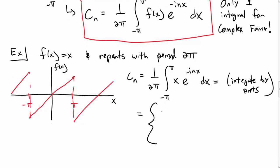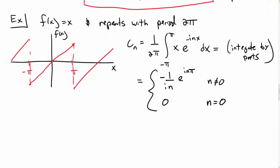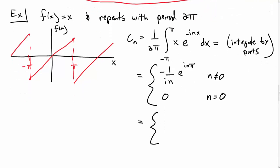But what I get then, it depends on which case I consider, if n is equal to 0 or not equal to 0. If n is not equal to 0, I get -1/(in) e^(inπ). And I get 0 if n is equal to 0. E to the inπ, I can write as (-1)^n.